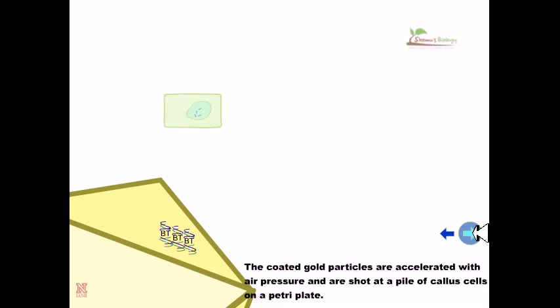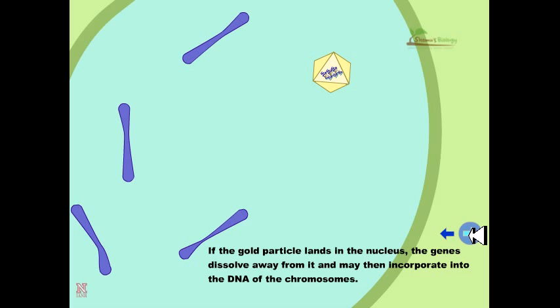The coated gold particles are accelerated with air pressure and are shot at a pile of callus cells on a petri dish. When the gold particle lands on the nucleus, the genes dissolve away and may then incorporate into the DNA of the chromosome.